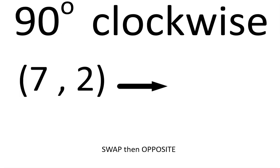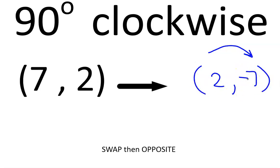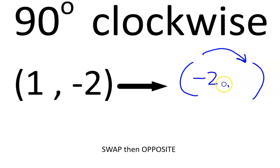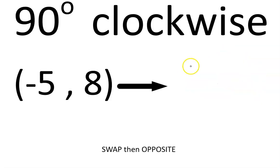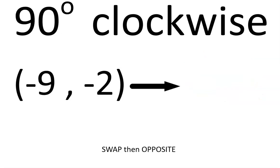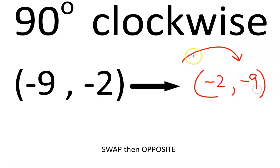Let's try more examples. 90 degrees clockwise: draw the directional arrow, swap the numbers, change the sign — swap, then opposite. Another one: 90 degrees clockwise, draw the directional arrow, swap the numbers, change the sign. One more: 90 degrees clockwise — draw your arrow, swap your numbers, and change the sign. That's going to be a positive 5, or you can erase the sign altogether. Swap, then opposite. One final one: 90 degrees clockwise — swap the digits, change only one sign.